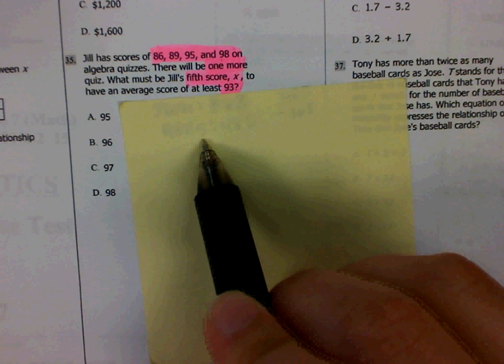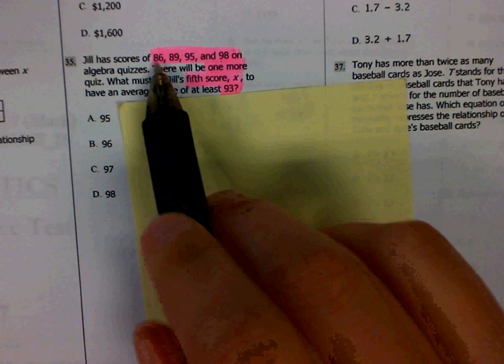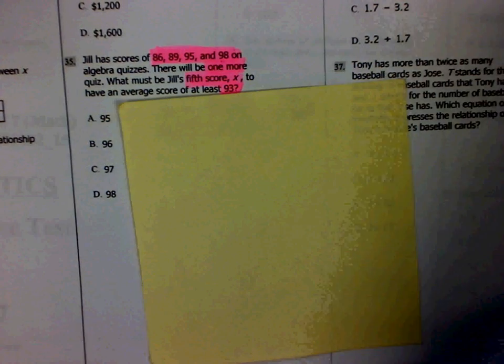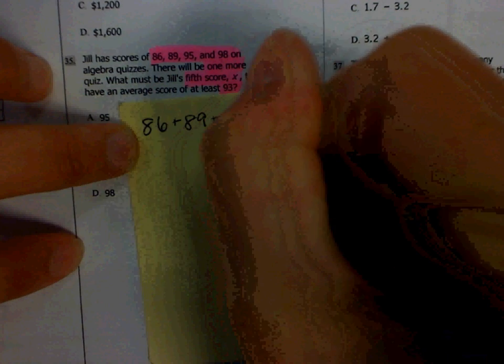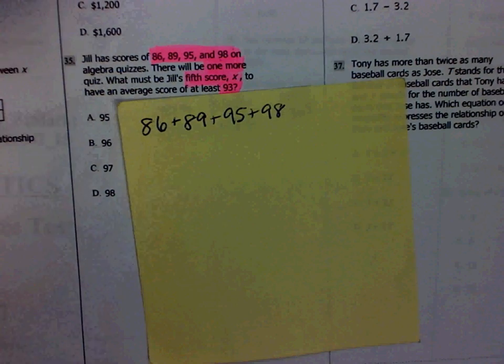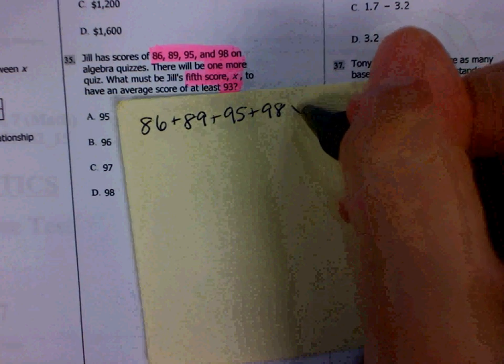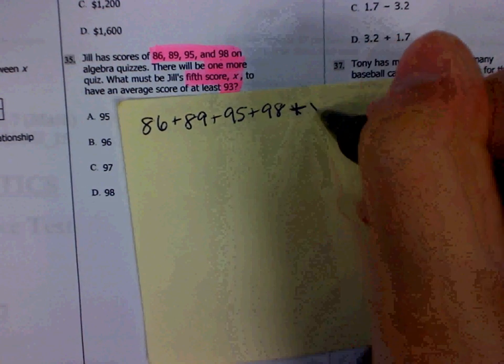The easiest way to solve this is to write an equation. The first thing that you're going to want to do is add up all the scores you know. So her first score is 86, 89, 95, and 98. Now I do not know what my fifth score is going to be, so I'm going to use a variable there. I'm going to say that my fifth score is X.